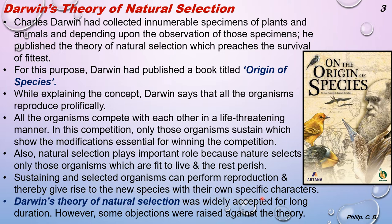The species which are able to adjust or acclimatize to different climatic conditions survive; those which cannot, perish. The sustaining and selected organisms perform reproduction, thereby giving rise to new species with their own specific characters. Darwin's theory of natural selection was widely accepted for a long duration; however, some objections were raised against the theory.